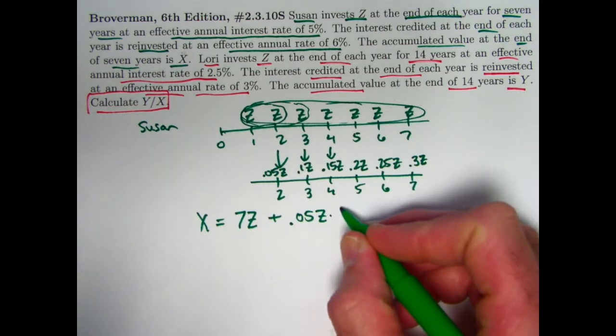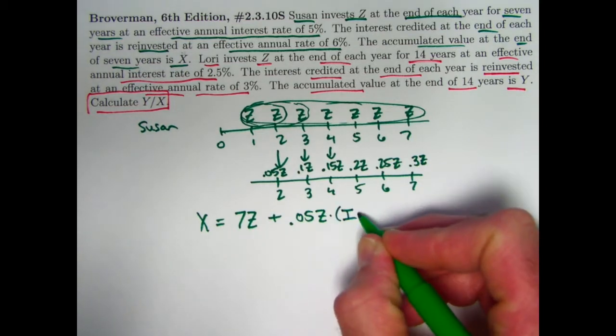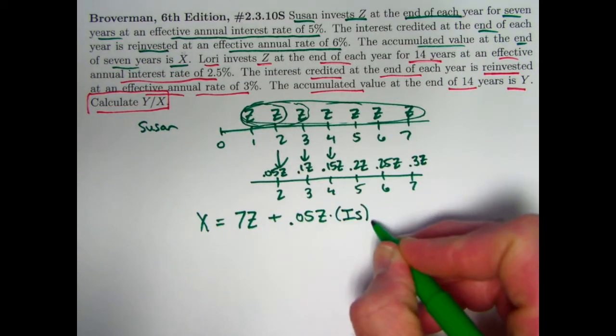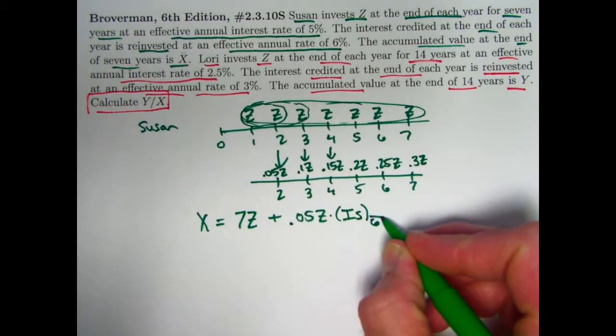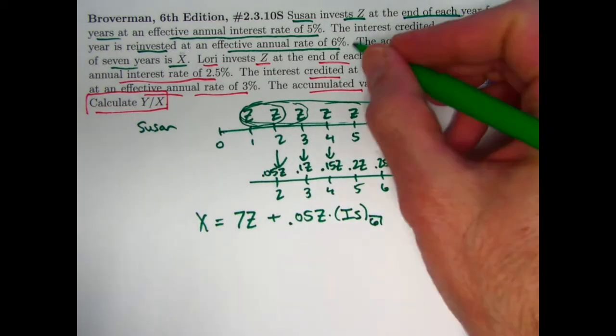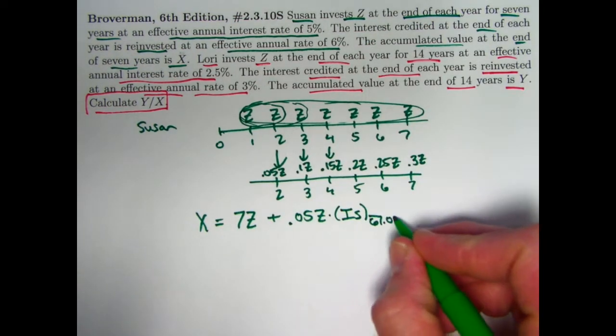The future value of that increasing sequence was denoted by IS sub N, where in this case, how many payments do we have? 1, 2, 3, 4, 5, 6 - 6 payments in this other account that's got an interest rate of 6%. So this is what X is.